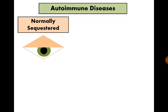If trauma occurs to these sequestrated organs, their antigens will be presented to the immune system for the first time. The immune system will therefore consider them as foreign and attack them.